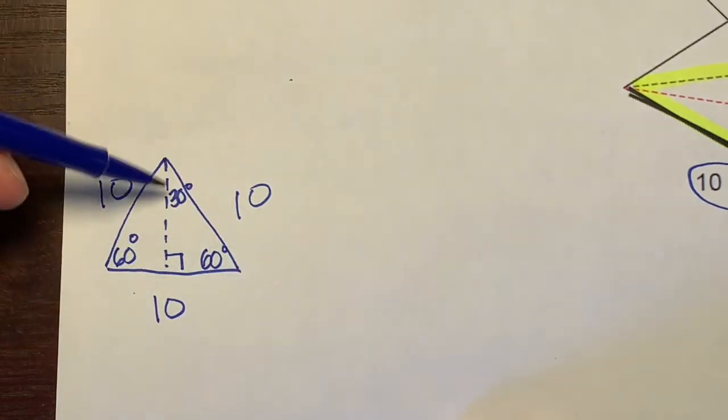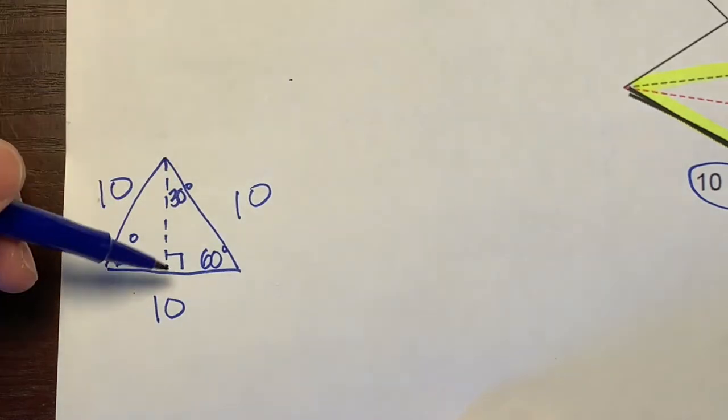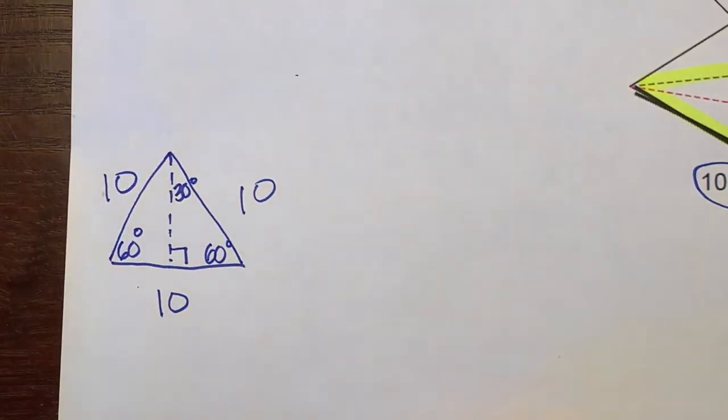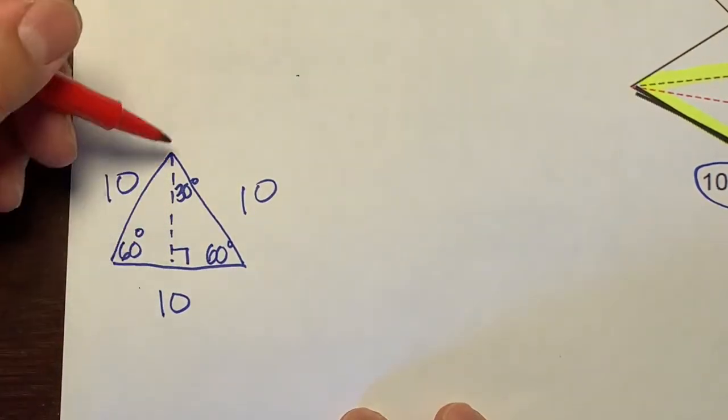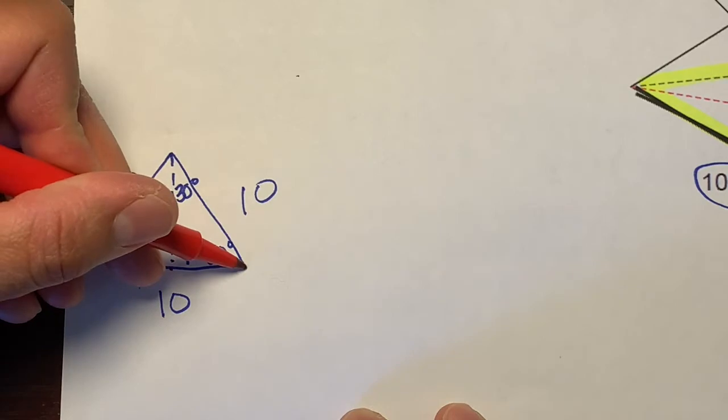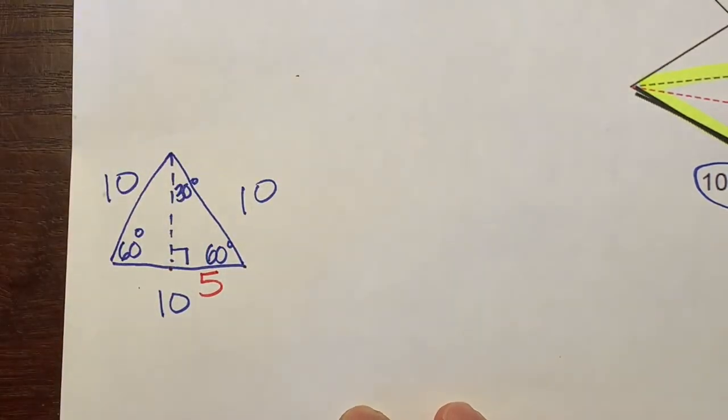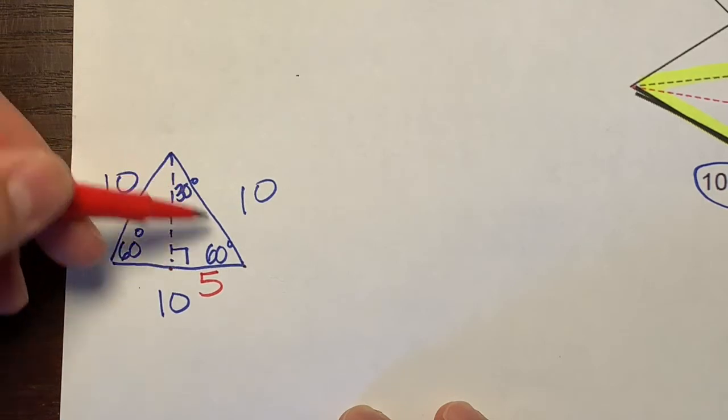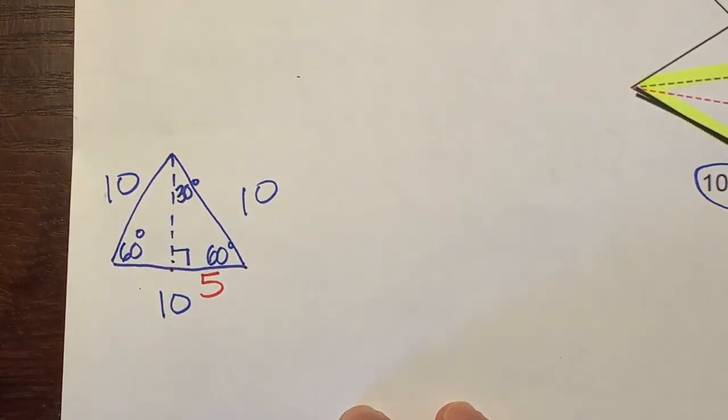They have two lines that make a 90-degree angle, so it would be this line and this line. We have the length of this but we need to figure out what the length of this is. That's why we split this triangle in half. We bisected it. The length from here to here, just half of this, is 5.